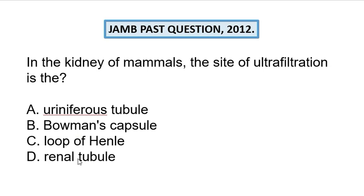In the kidney we have the cortex and the medulla, and we also have structures known as the nephrons. We have the Bowman's capsule which is responsible for filtration, so the site of ultra filtration is the Bowman's capsule. The site of selective reabsorption is the uriniferous tubules, which also includes the loop of Henle.